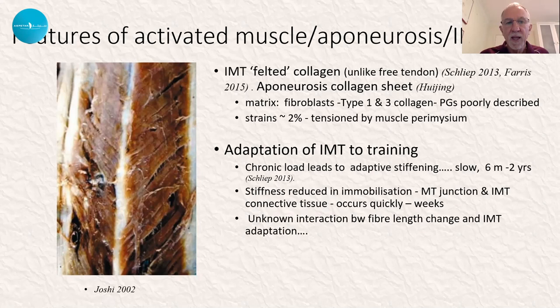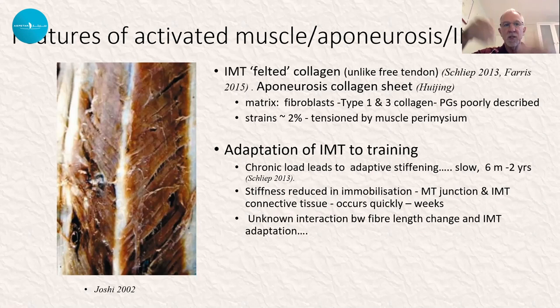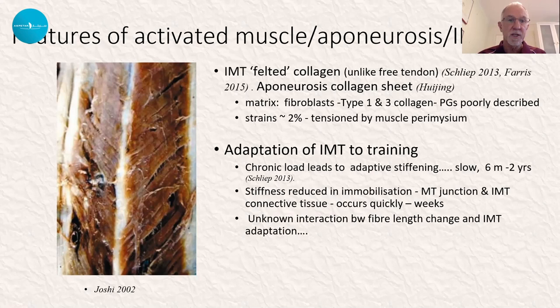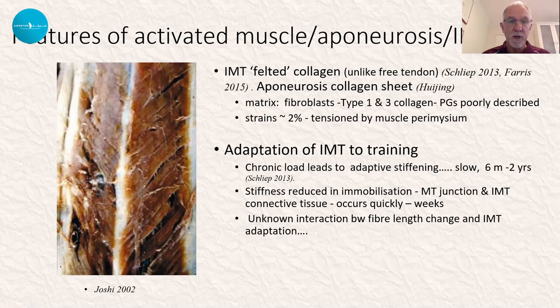The proteoglycans of this particular intramuscular tendon are pretty much not described to date. Similar to what we saw in the soleus aponeurosis, the intramuscular tendon strains very little — only around 2% — and as the muscles contract they actually tension this intramuscular tendon even more, making it a little stiffer. It does adapt to training: over a period of around six months to two years, these chronic loads lead to some adaptive stiffening.